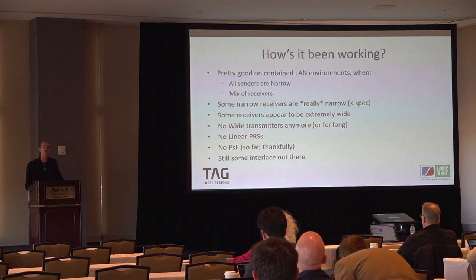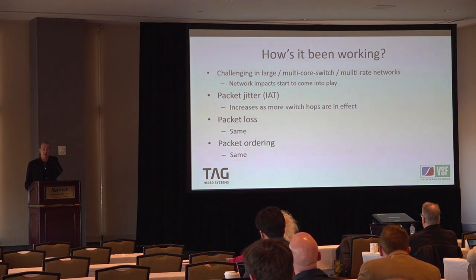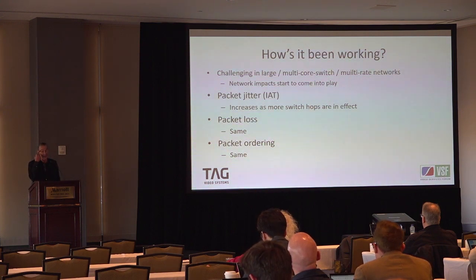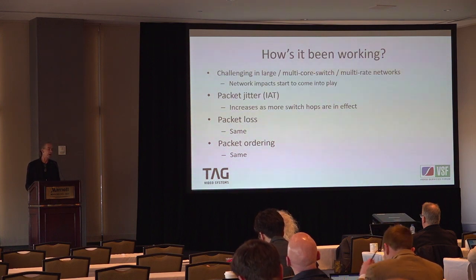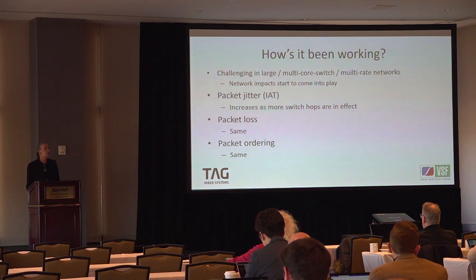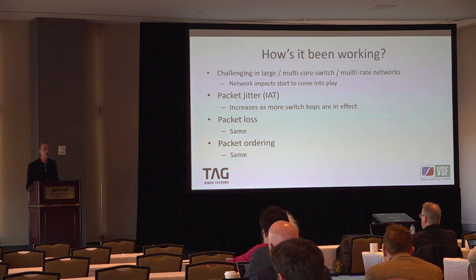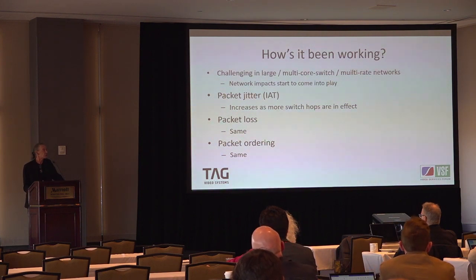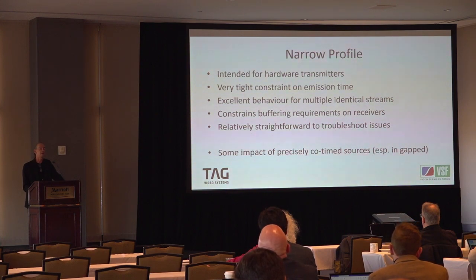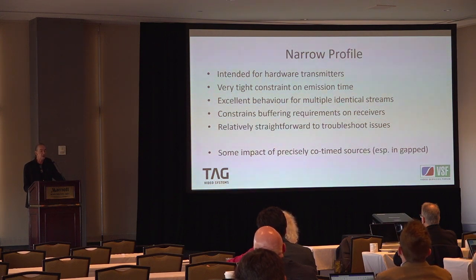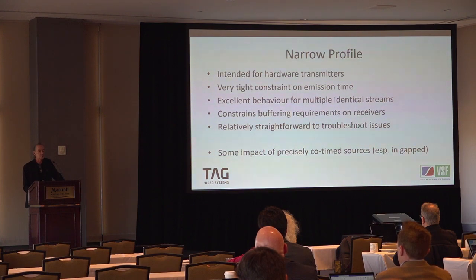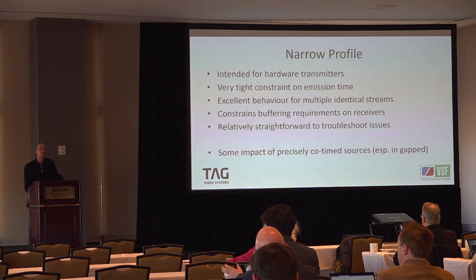We still have interlace — that's not going away for quite some time. In large multi-core, multi-rate networks, network impacts start to come into play. IAT is a big one: as you get more switch hops, especially going up to a higher speed core and back down to a lower speed interface, you can see packet jitter increasing as packet ordering gets swapped. We see some packet loss and packet ordering issues, but pretty well overall. The narrow profile, intended for hardware transmitters, constrains buffering and is relatively straightforward to troubleshoot. Precisely co-timed sources cause a burst of packets when they all reach vertical and start transmitting again.